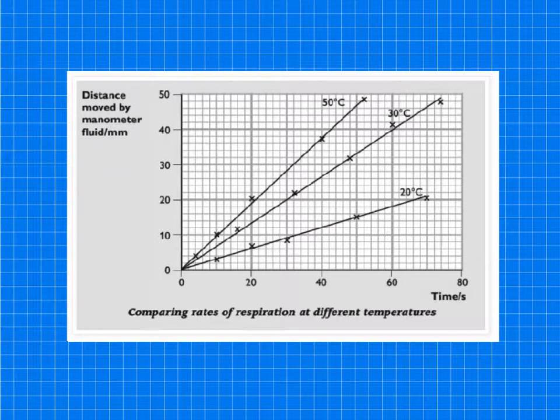So here's a graph of some results I made earlier. So it's showing the distance of the movement of the fluid moved in the manometer, in millimetres. And it's got the time in seconds. And it's comparing three temperatures, 20, 30 and 50. Now, here's a little tip. If you're simply comparing the rates of respiration at different temperatures, then you don't need to convert the distance moved by the manometer fluid to a volume. You could just plot the distance moved on the y-axis of your graph, time on the x-axis, and then you will get a gradient.